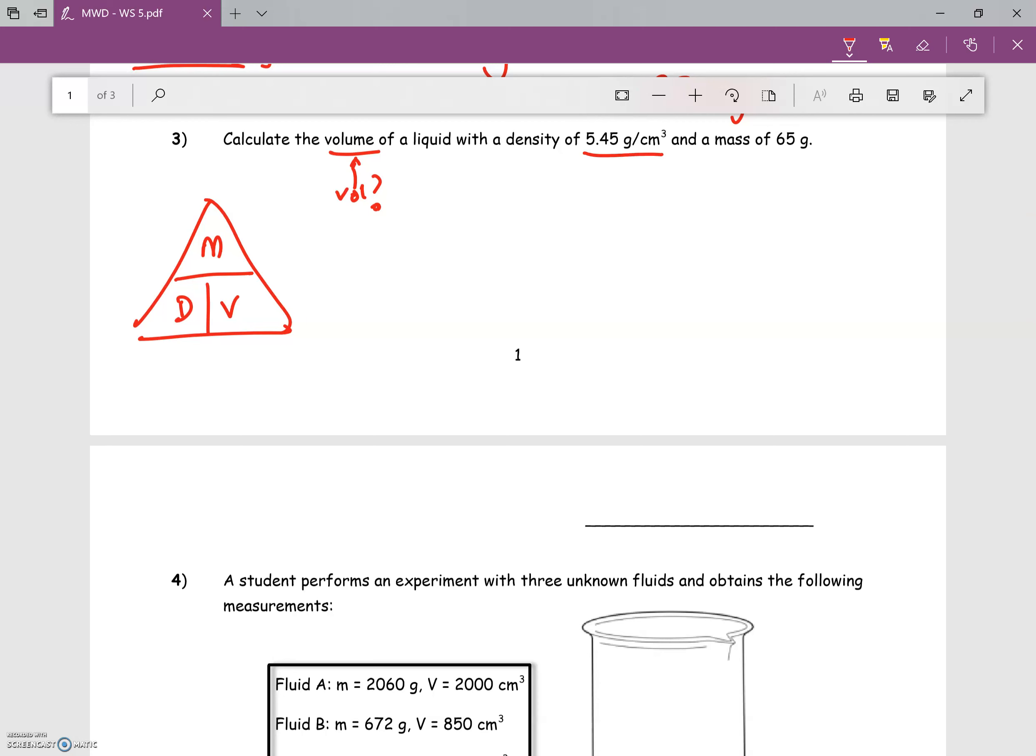The liquid has a density of 5.45 g/cm³ and a mass of 65 g. Now I need to find the volume.